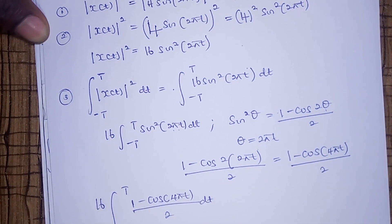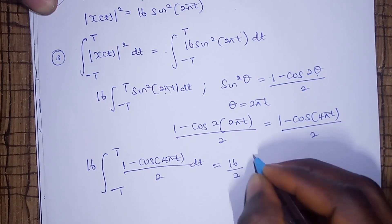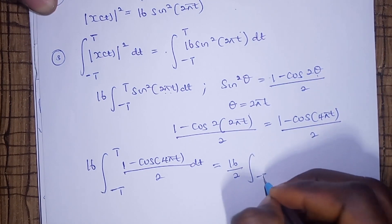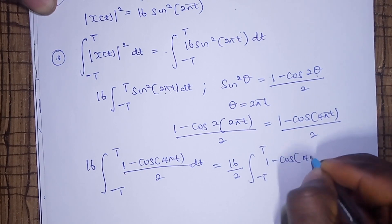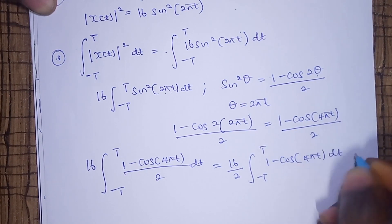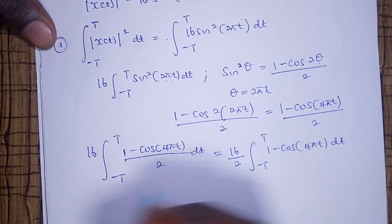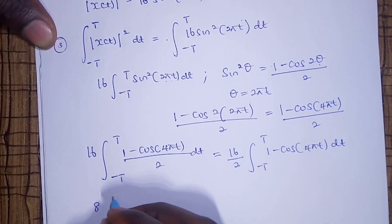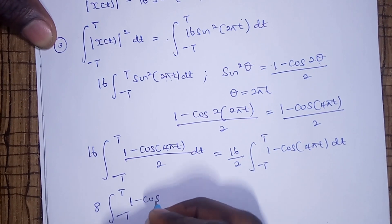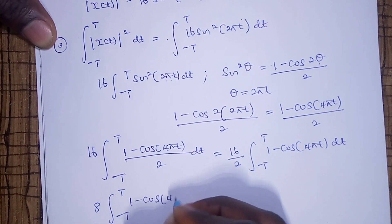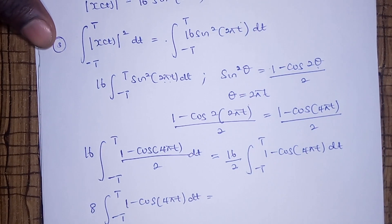We can bring the 2 out, so 16 divided by 2 is 8. We now have 8 times the integral from negative T to T of (1 minus cos 4 pi t) dt. We can now take this integration.